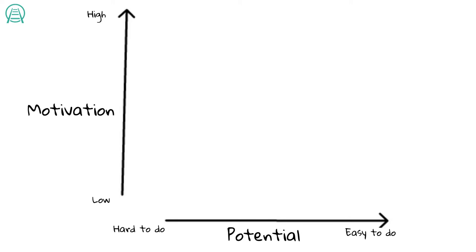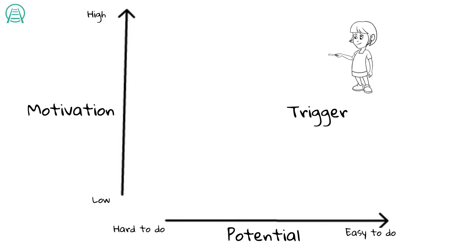Let me share a little example. Suppose you want someone to donate some backups to the Red Cross or something similar. If they have high motivation and if it's easy for that person to do, they will be here in the upper right corner of the model. When a person gets here and gets prompted through a trigger to donate, they will do the donation behavior. In contrast, if someone has low motivation to donate and it's hard for them to do, they will be here in the lower left corner. When that person is prompted by a trigger, they will not do the thing.